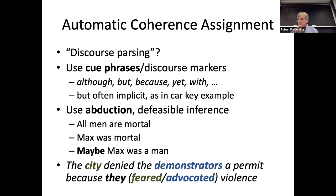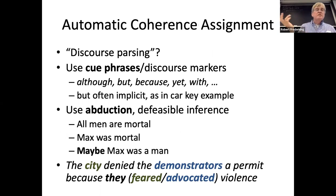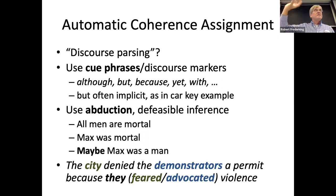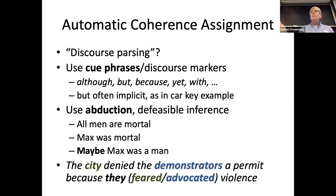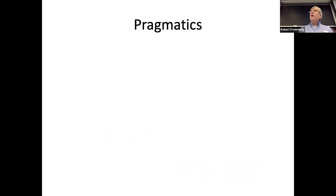One of the things that bedevils all these approaches is that semantics can often override other things. If you actually know what people are talking about, that affects your interpretations. The famous sentence: 'The city denied the demonstrators a permit because they feared violence' — it's the city government people doing the fearing. But if you say 'they advocated violence,' all of a sudden the pronoun refers to the demonstrators. You actually have to know the meanings of things and how people in the world work to get it right.